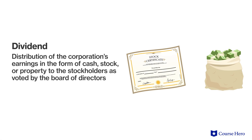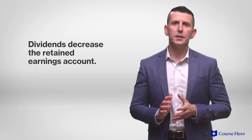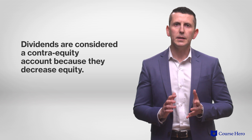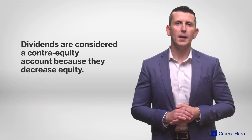A dividend is a distribution of the corporation's earnings in the form of cash, stock, or property to the stockholders as voted by the board of directors. Dividends decrease the retained earnings account. Because the retained earnings account carries a net credit balance, the balance for dividends is a debit. For this reason, dividends are considered a contra equity account because they decrease equity.